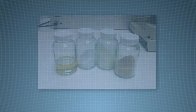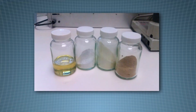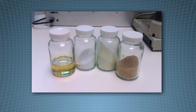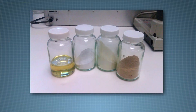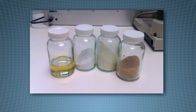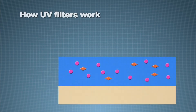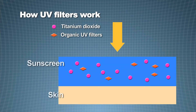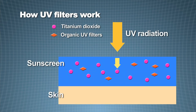Each sun care formulation contains a range of UV filters. These UV filters protect the skin from the UV radiation, and they act in three main mechanisms: to reflect, to scatter, and to absorb the UV radiation.